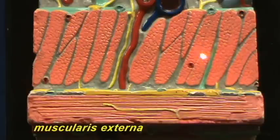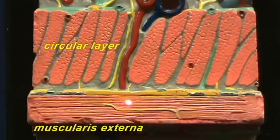The muscularis externa consists of two layers of smooth muscle: an inner circular layer and an outer longitudinal layer.